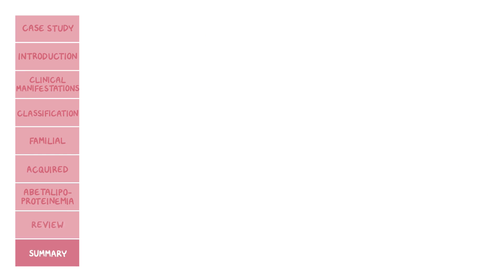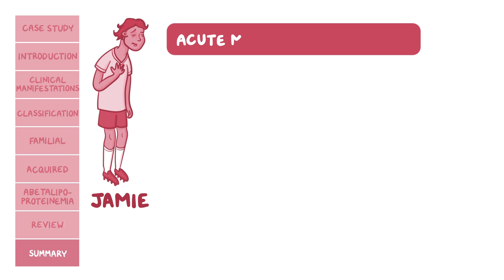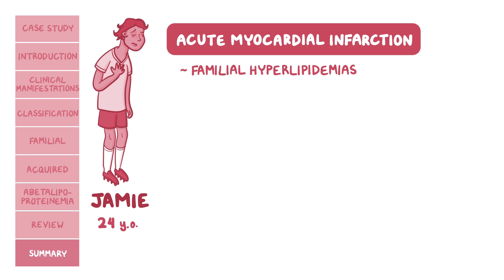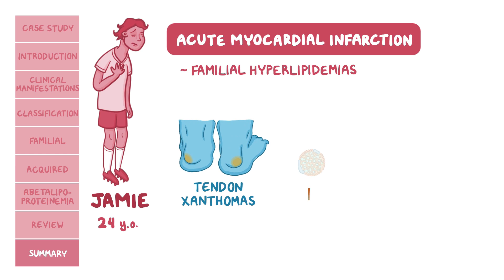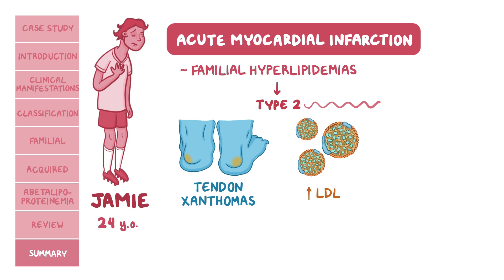Back to our case: Jamie is presenting with an acute myocardial infarction. Considering his relatively young age, it's important to consider familial hyperlipidemias. Tendon xanthomas on examination, combined with elevation of LDL on lab testing, all point towards type 2 familial hyperlipidemia, usually caused by a decrease in the number of LDL receptors or ApoB100 protein in the liver.